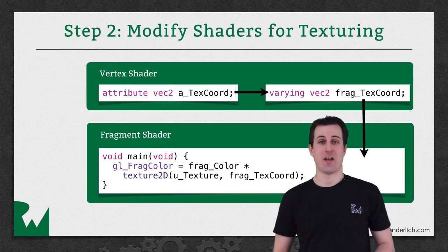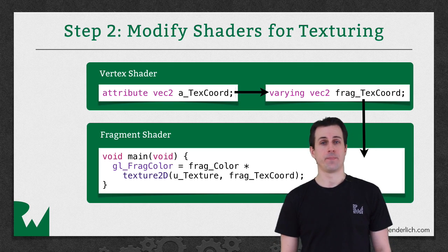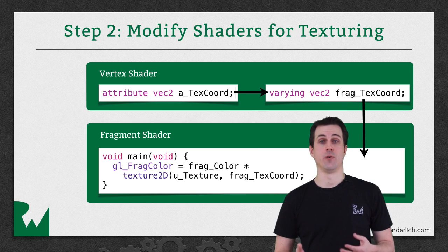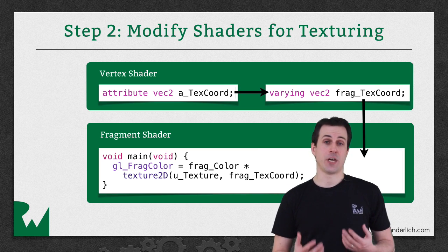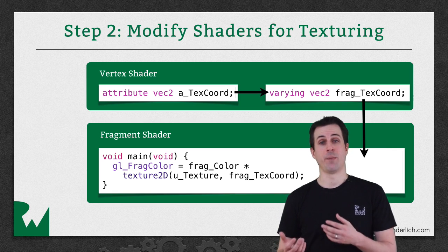Next, you need to modify your shaders to support texturing. And this is actually fairly simple. It only needs a few lines of code. The first thing you need to do is add a new attribute for your new vertex attribute, your texture coordinate. And the vertex shader won't actually do anything with it except pass it as an input variable to the fragment shader.